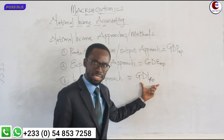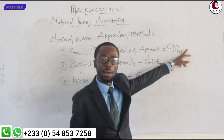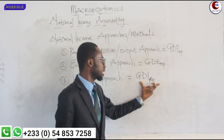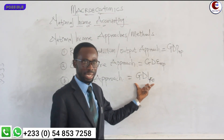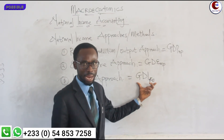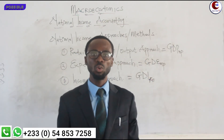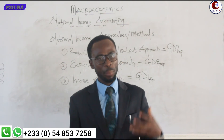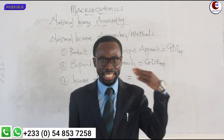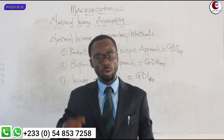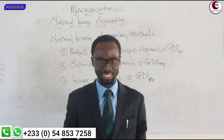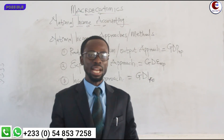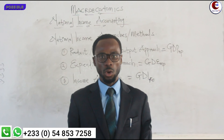Under the product approach, intermediate goods are subtracted. Stock appreciation — we subtract it. Under the income approach as well, make sure to subtract stock appreciation. In our next lecture, we are going to do computations — full questions and calculations. So pick up your calculator, pick up your pen, get a notebook. If you are feeling sleepy, sleep and when you wake up continue with the calculations.